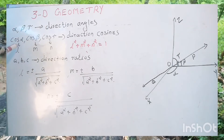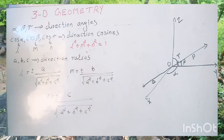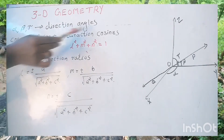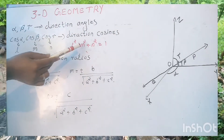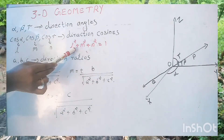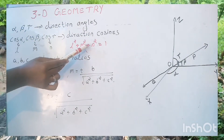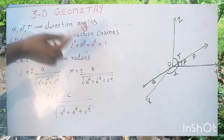Cos alpha is denoted by L, cos beta is denoted by M, cos gamma is denoted by N (small letters). The relation between the direction cosines is L squared plus M squared plus N squared equals 1. That is the relation between direction cosines.